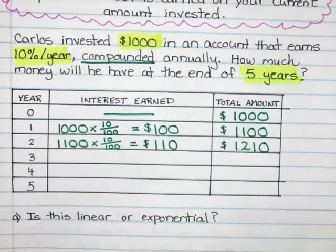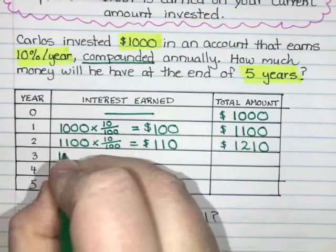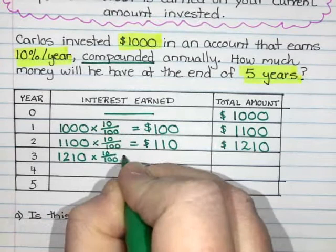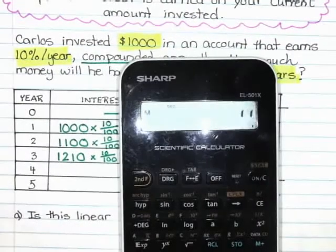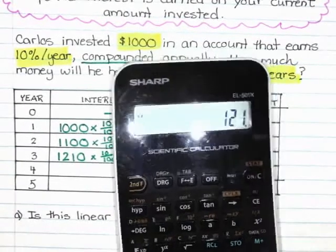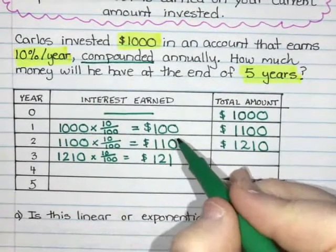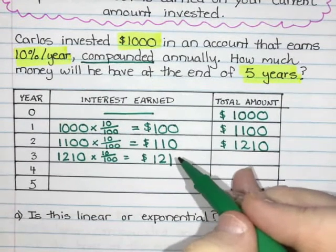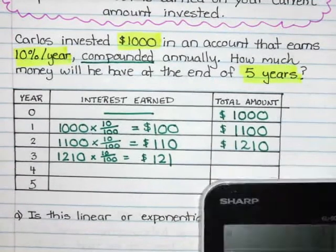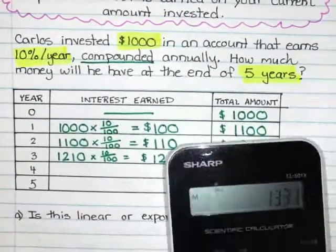Year three rolls around and he gets another 10% interest on his current balance. So $1,210 times 10 divided by 100. That gives him $121 in interest. You'll notice every time he's getting a little more interest because his balance is going up. Adding $121 to $1,210 gives a grand total of $1,331.